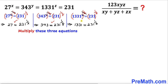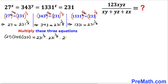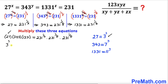Now let's multiply all three equations together. On the left-hand side: 27 × 343 × 1331. On the right-hand side: 231^(1/x) × 231^(1/y) × 231^(1/z). We note that 27 = 3³, 343 = 7³, and 1331 = 11³, so the left side becomes 3³ × 7³ × 11³.